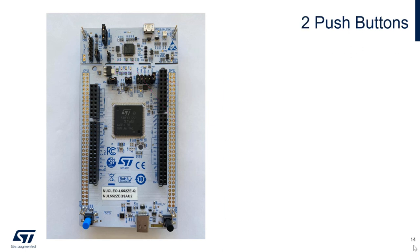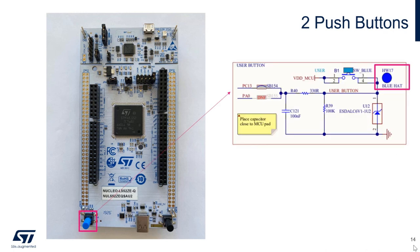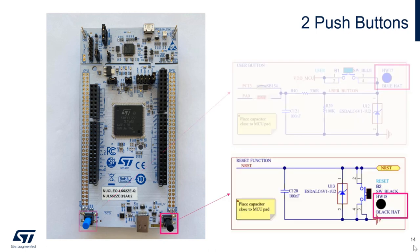There are two push buttons available on the Nucleo board. On the lower left-hand corner is a blue user button. This button can be accessed through pin PC13. On the other side, in the lower right-hand corner, is a black button. This button is connected directly to the micro's reset line.